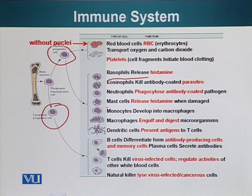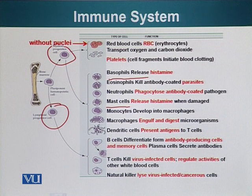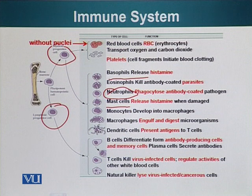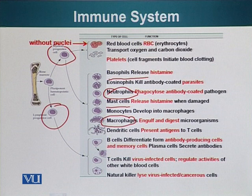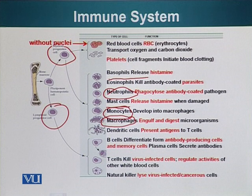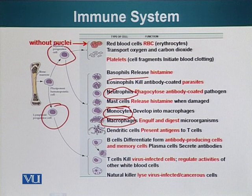The other white blood cells include basophil cells and mast cells. Both contain histamine and release it when required. Eosinophil cells kill antibody-coated parasites. Neutrophils and macrophages engulf and digest microorganisms or pathogens. Macrophages come from monocytes — monocytes develop into macrophages.